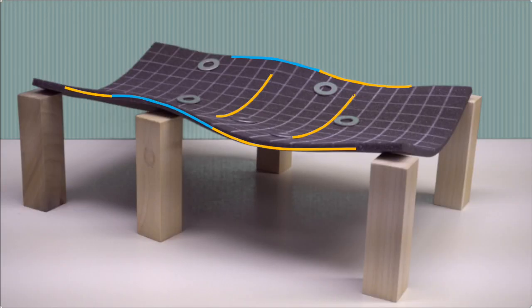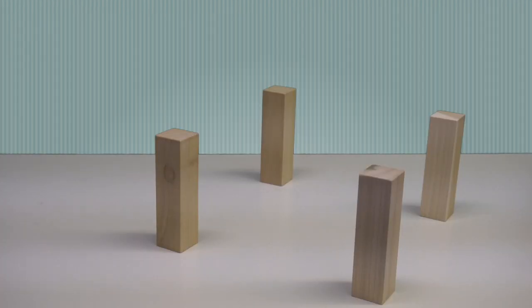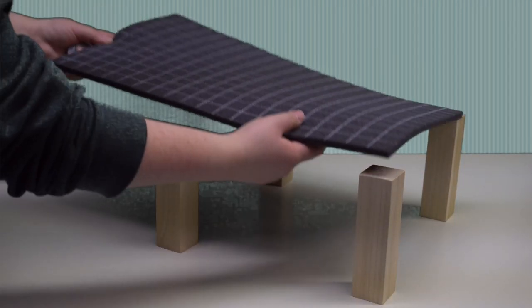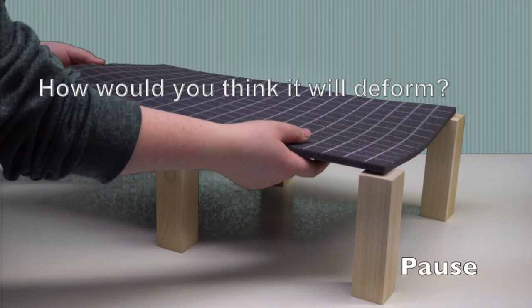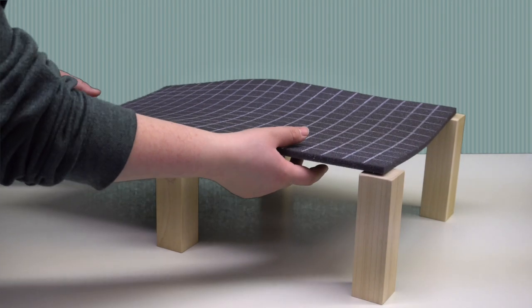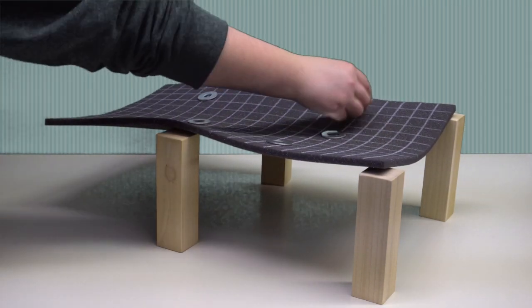And here is a column-supported plate that spans two bays. Suppose we had a floor with an overhang. How do you think it would deform? Here is what the model shows us.